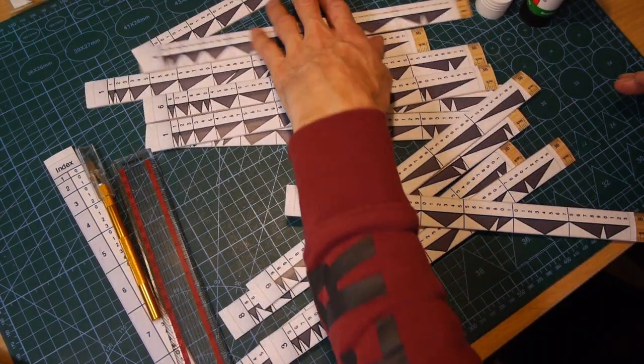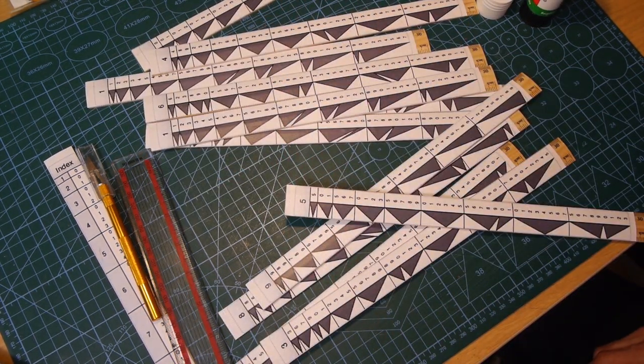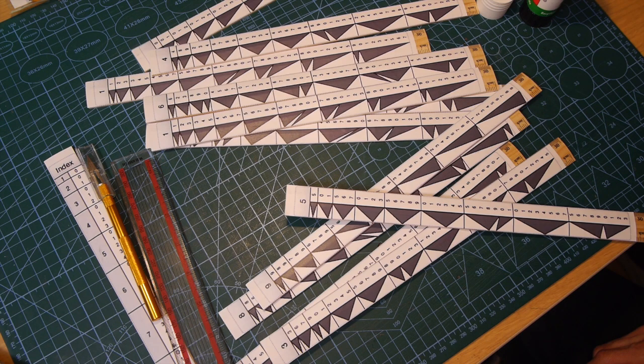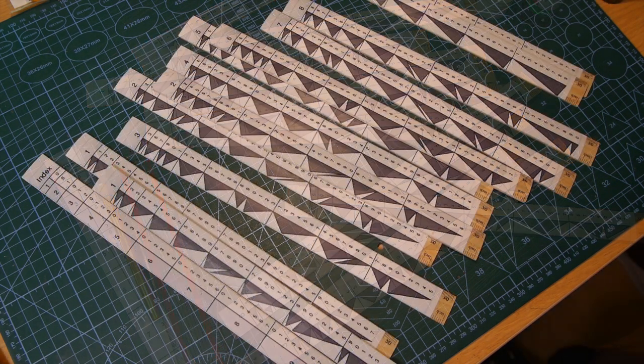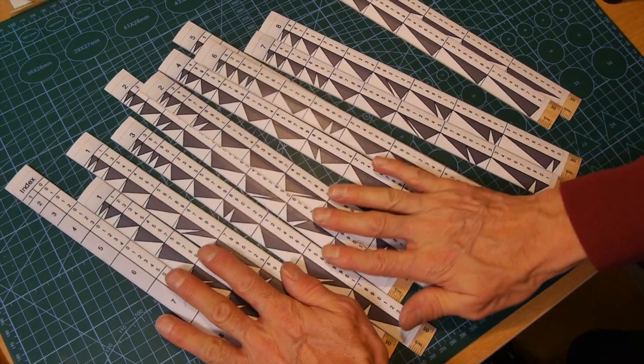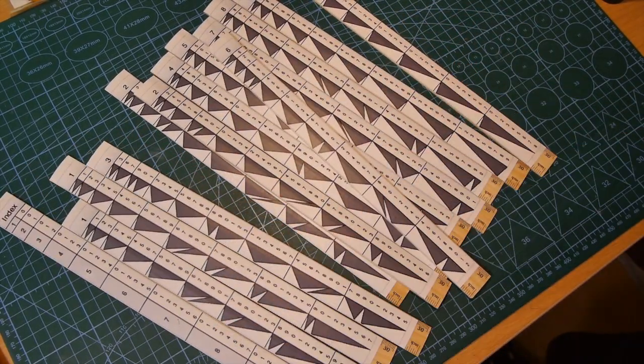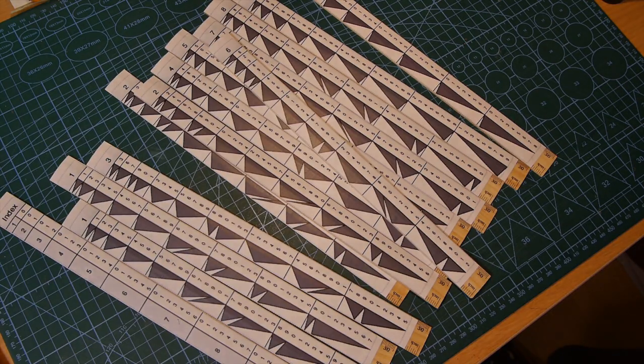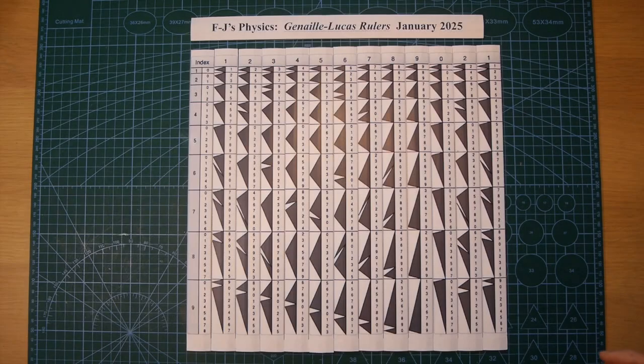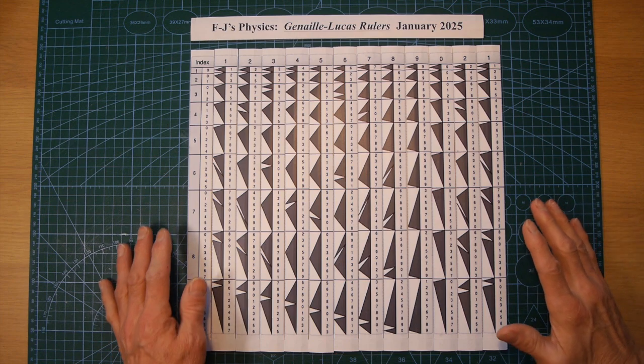So, with all the rulers done, it was ready to get calculating. But the eagle-eyed amongst you might notice that I've got two 2s in this pile, and I've also got two 1s as well. And I'm going to explain, in a minute, why I did that. So, now I've made the rulers, let's have a closer look at them, and how they work.